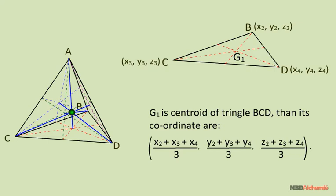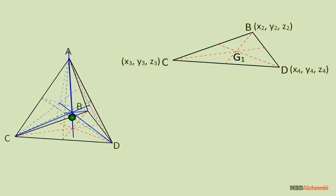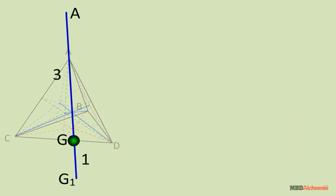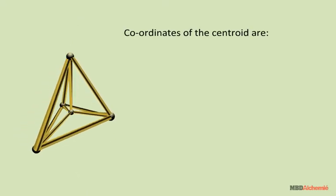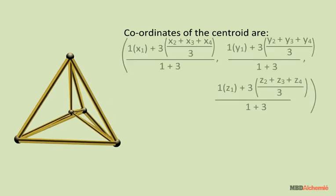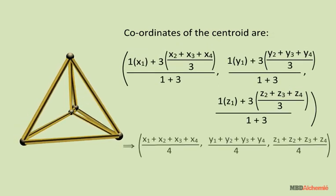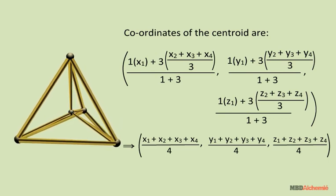Coordinates of the centroid are written here. For line AG1, the centroid G divides it in 3 is to 1 ratio. These are the coordinates of G, the coordinates of the point which divides AG1 in 3 is to 1.